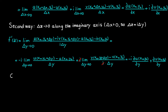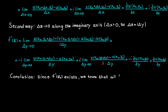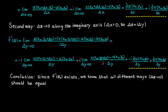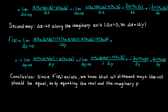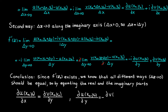Since the derivative exists, we know that all different paths must agree, so these two complex numbers must be the same. For two complex numbers to be equal, their real parts and imaginary parts must each agree. This gives us exactly the Cauchy-Riemann equations. With that we have proved that if a function is differentiable at some point in the complex plane, then the function must fulfill the Cauchy-Riemann equations at the same point.